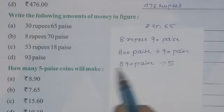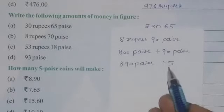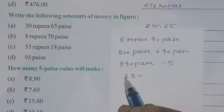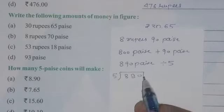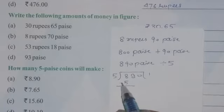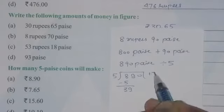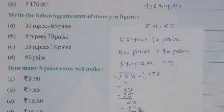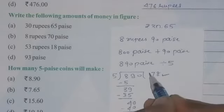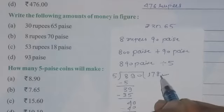On dividing 890 by 5: 5 ones are 5, 8 minus 5 is 3, bring down 9, 5 sevens are 35, subtracting gives 4, bring down 0, 5 eights are 40, subtracting gives 0. So the answer is 178 — a total of 178 coins of 5 paise.